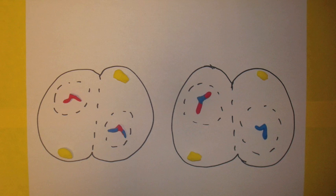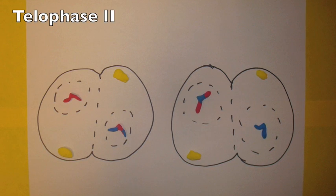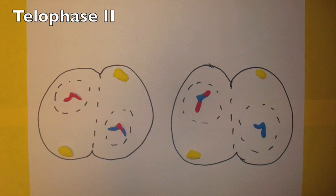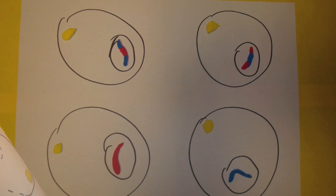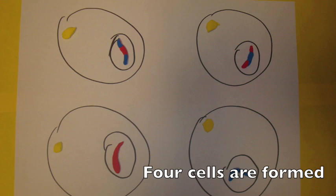In telophase II, chromosomes with only one chromatid decondense and get surrounded by a new nuclear envelope. The four daughter cells are now all haploid and have the right amount of DNA. They are ready to develop into sperm or eggs.